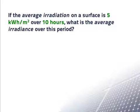If the average irradiation on a surface totals 5 kilowatt hours per meter squared over 10 hours, what is the average irradiance over this period?